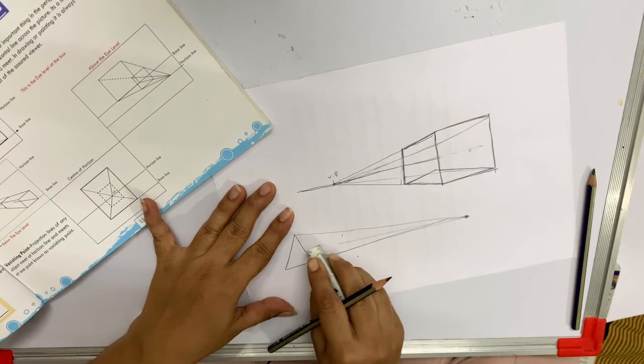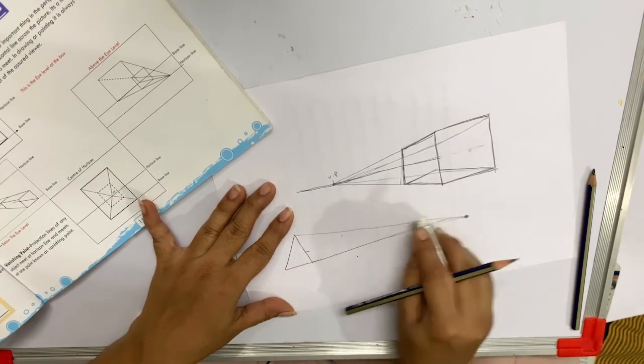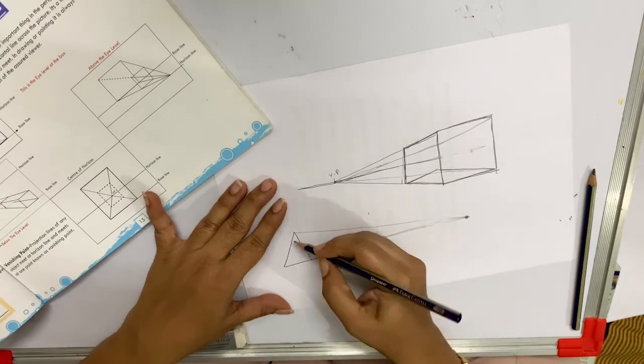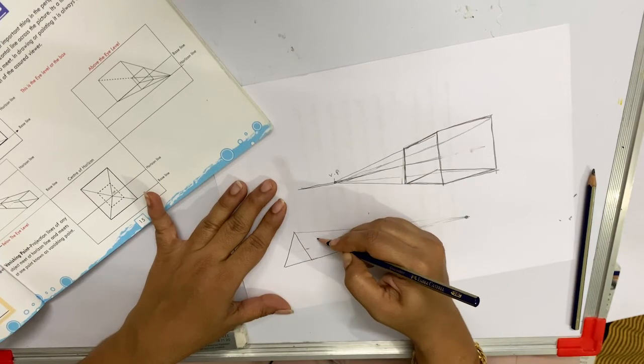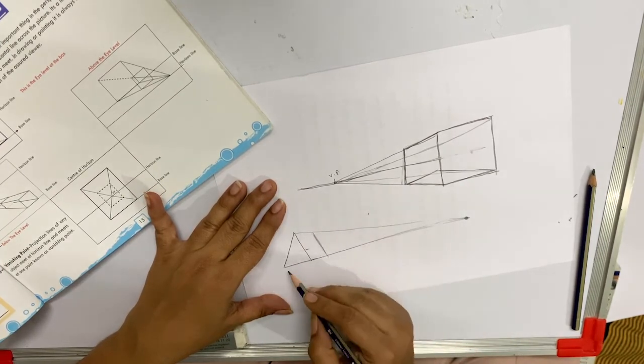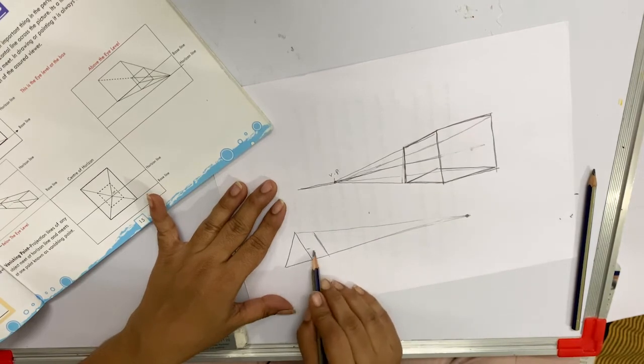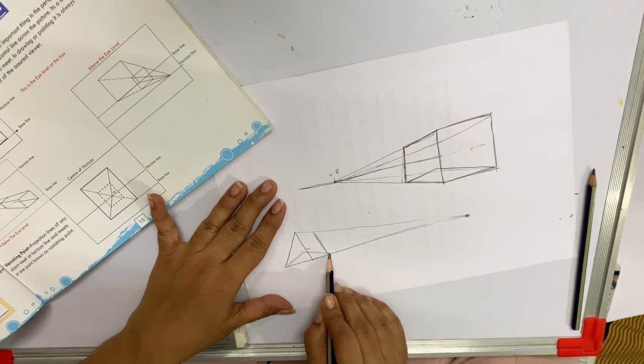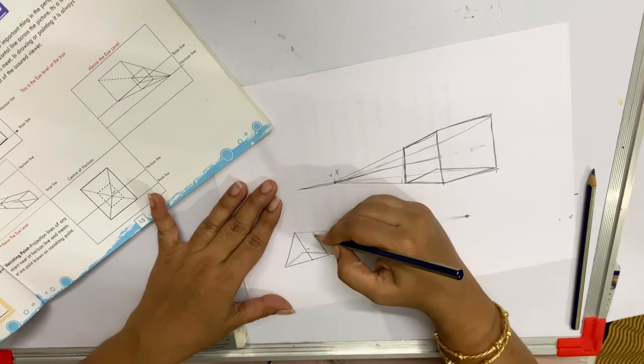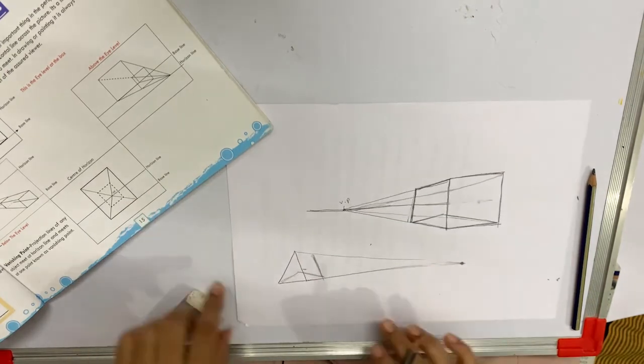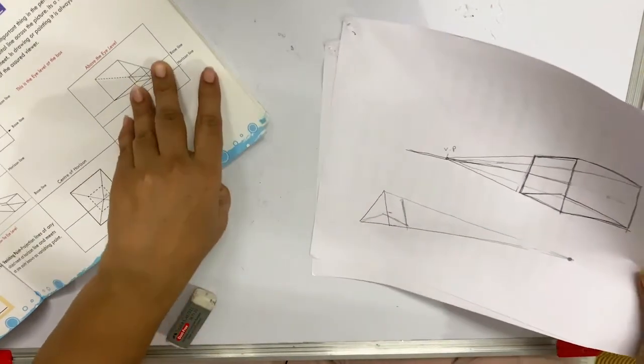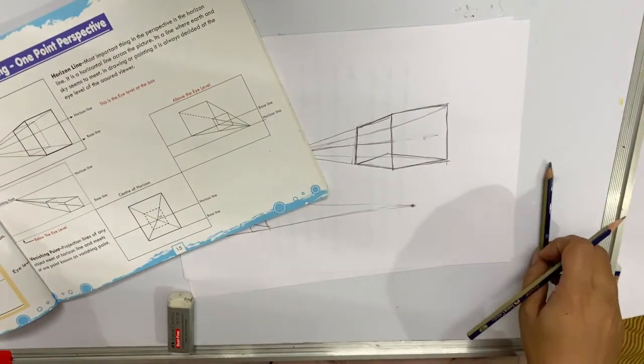Now if we just rub our horizon line, see, you can see this gives you a 3D effect. You can see a 3D object like this. So basically, perspective is always used to make a 3D object or give 3D effect or depth or a distance.